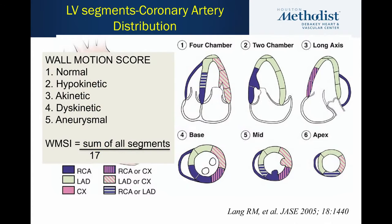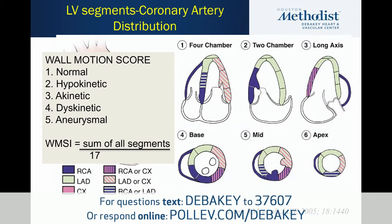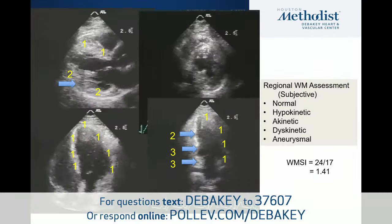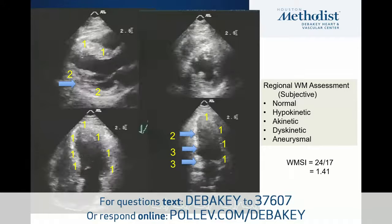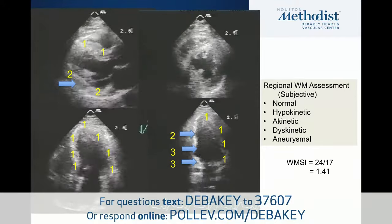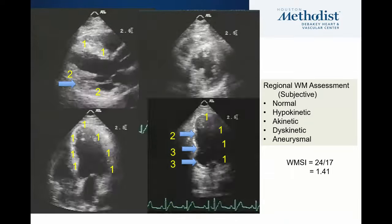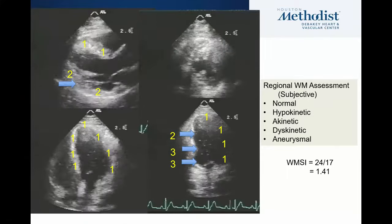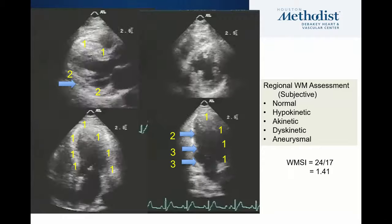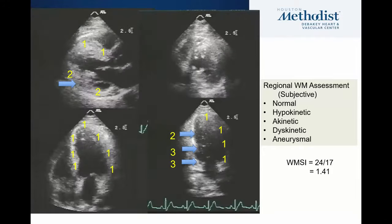We assign a value of 1 to normal contraction, 2 to hypokinesis, 3 to akinesis, 4 to dyskinesis, and 5 for frank aneurysm. If you add all scores and divide by 17 segments, a normal heart scores 1.0 — the higher the number, the more abnormalities. In this example, with twos for hypokinetic regions, threes for akinetic ones, and ones for normals, the sum of 24 divided by 17 gives a wall motion score index of 1.4.